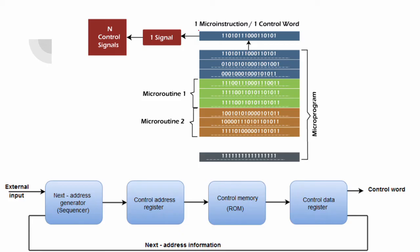Next is the general architecture. Each row in the control store is a control word — also called a micro instruction. Each bit position corresponds to a control signal: if active the signal is 1, if inactive it is 0. One line is one control word: control word 1, control word 2, up to control word N. The same set of control words forms a micro routine.